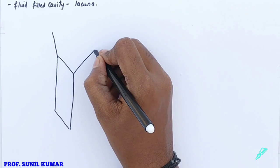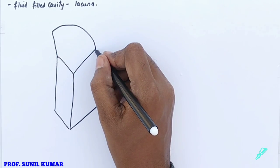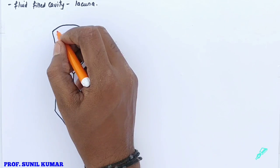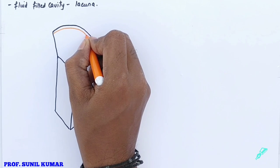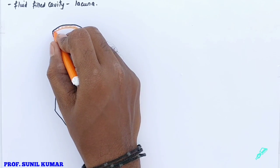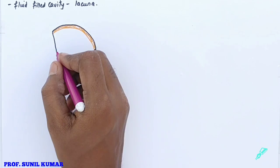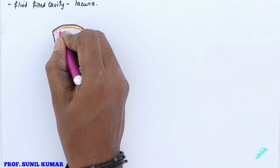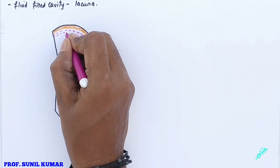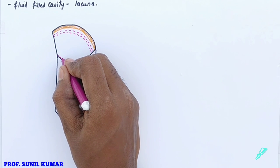Let's understand how to draw the structure of bone. We have taken a small piece — a longitudinal and transverse section — to study its various parts. The outermost covering is called the periosteum. The inner lining is called the endosteum — outer is periosteum, inner is endosteum.